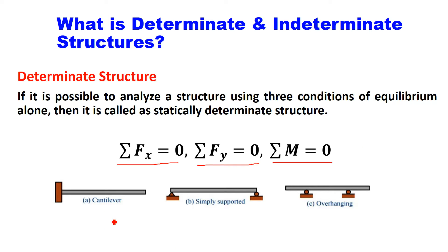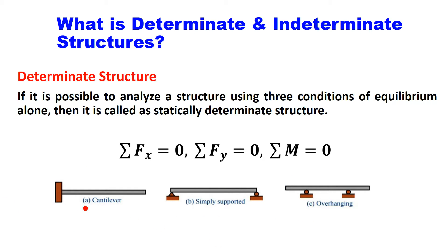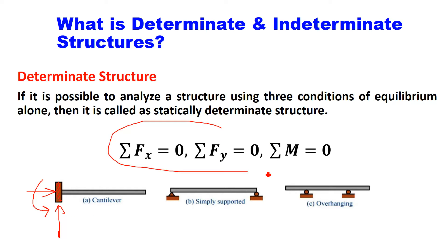For example, if you look at the beam figures shown — this is a cantilever beam, then simply supported beam, and then overhang beam. If you look at the cantilever beam, there is a fixed support provided at the left end and no support at the free end. We know that a fixed support has three reactions: horizontal reaction, vertical reaction, and moment. So there are three support reactions present in the cantilever beam and we have three conditions of equilibrium, meaning we can find out these support reactions. So it is a determinate beam.